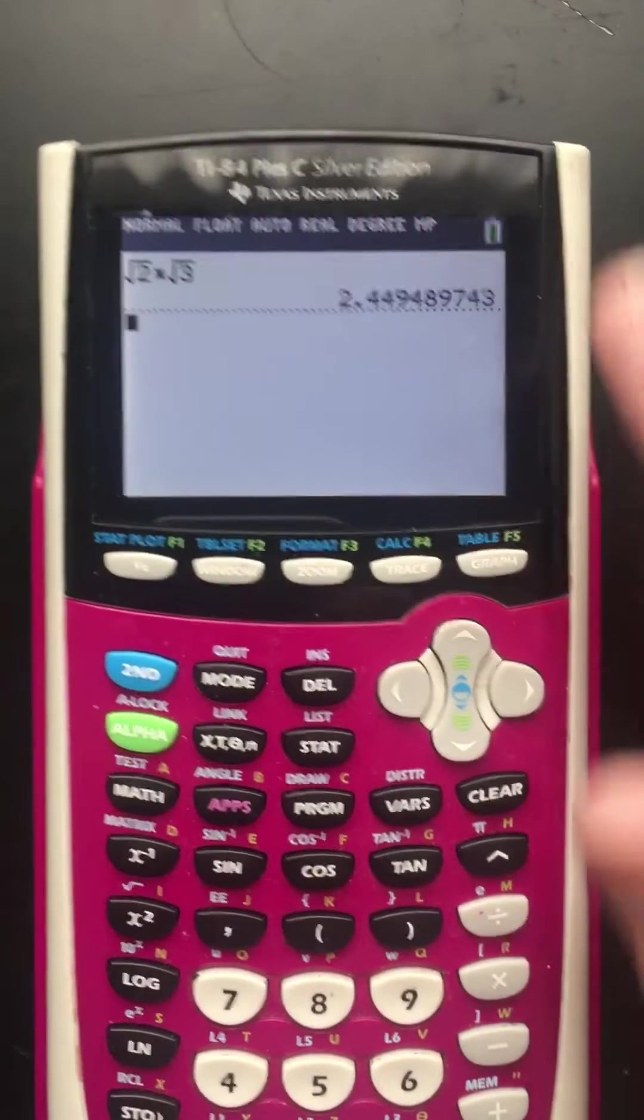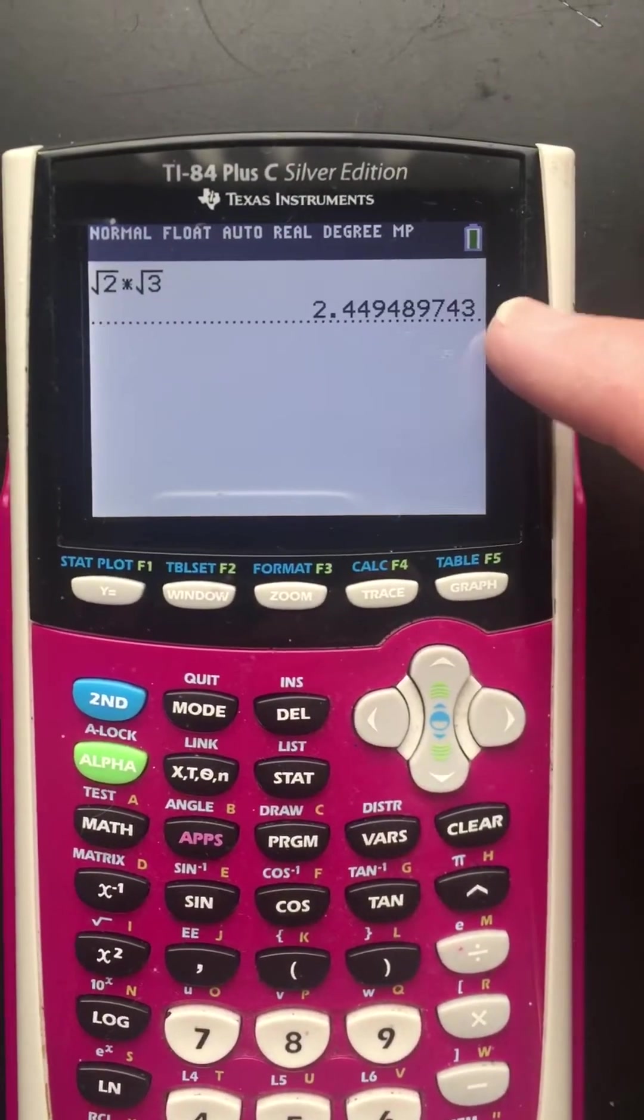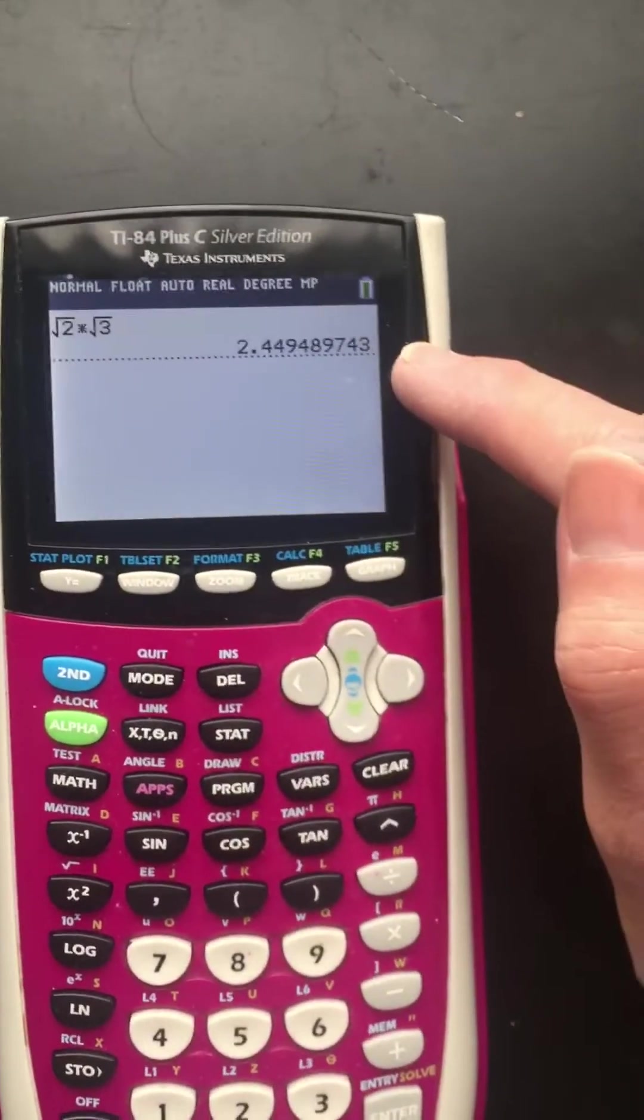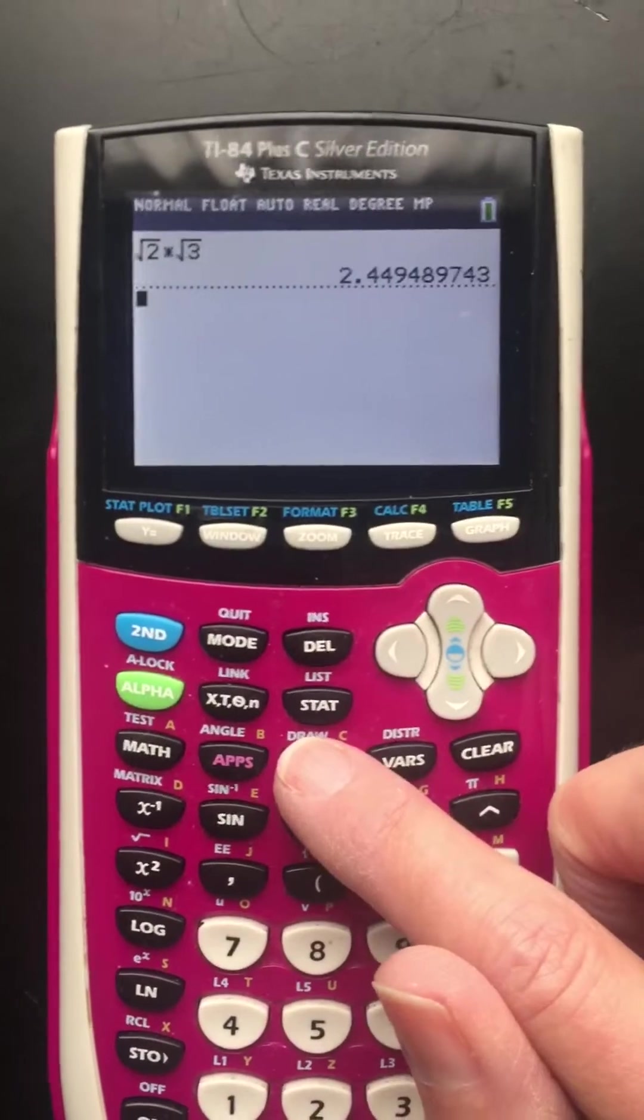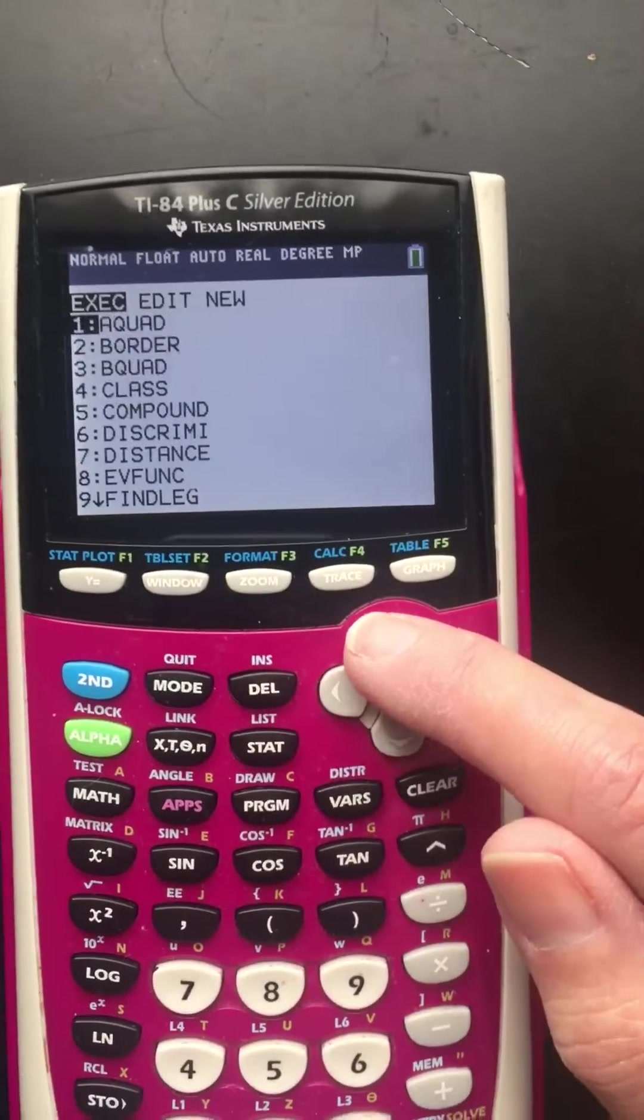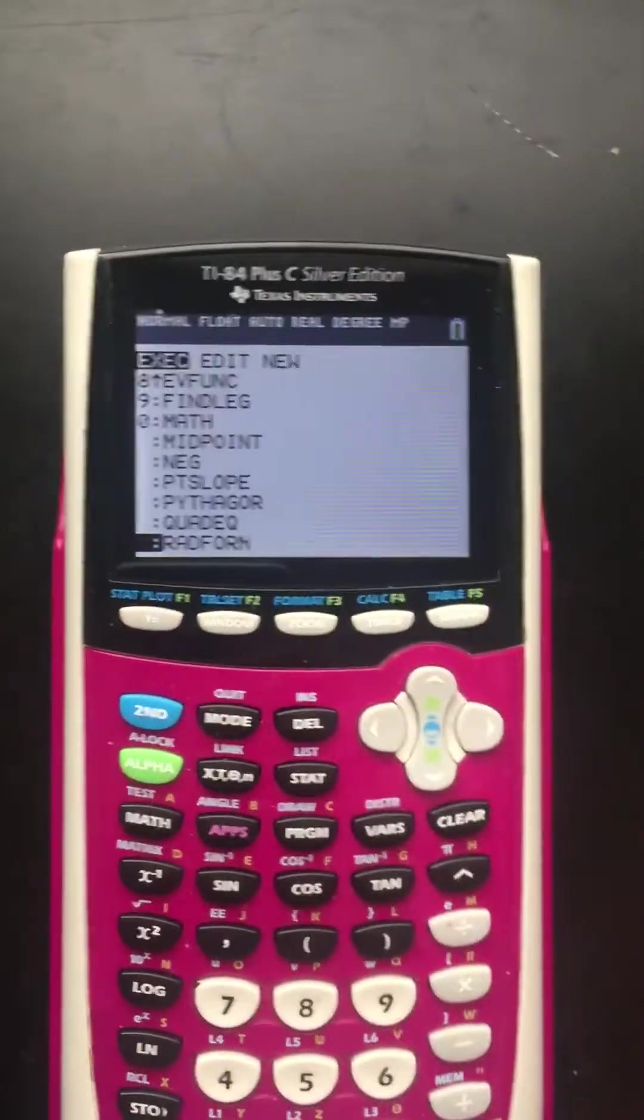So what we want is we want this. We do the math. We get it in decimal form and we want that now in radical form because that's what our Algebra 2 teacher wants. So once you get the program, what I've named this program is rad form. See, that sounds more cool than it is. Rad form.